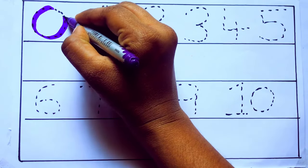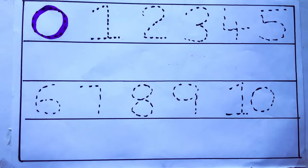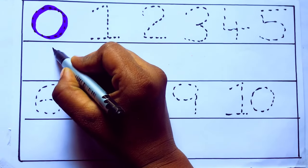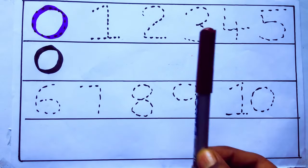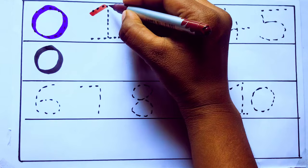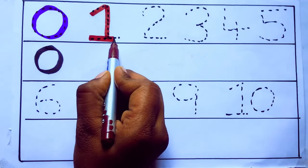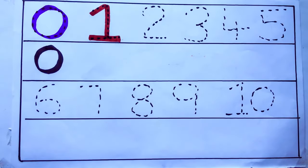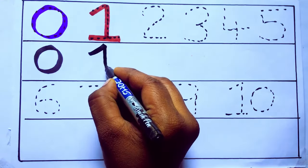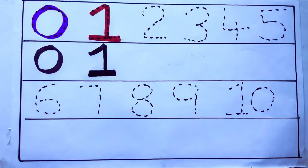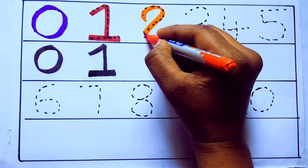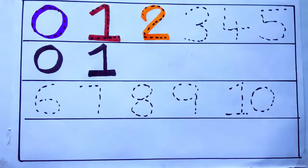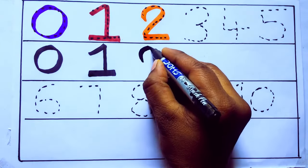Violet color, 0, Z-E-R-O, zero. Brown color, 1, O-N-E, 1, number 1. Orange color, 2, T-W-O, 2, number 2.